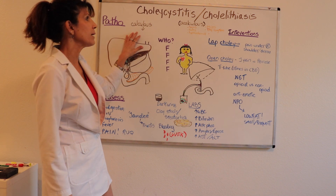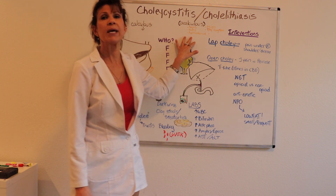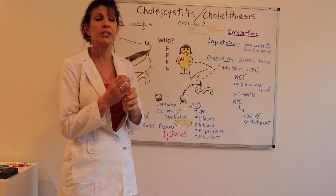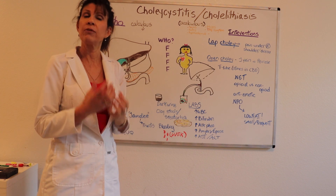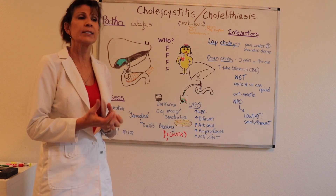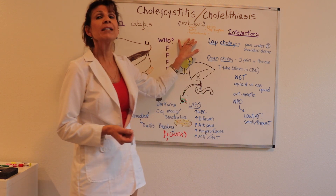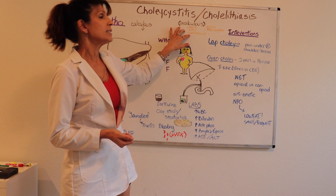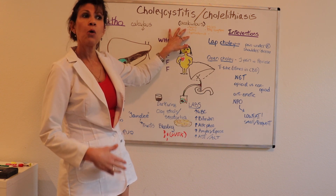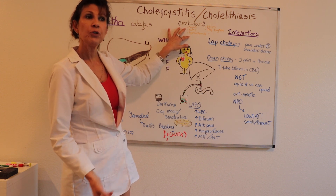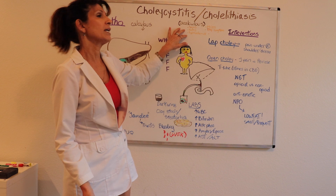There is also the type secondary to stagnancy of bile inside the gallbladder, which occurs in states of low flow and low perfusion — and that makes perfect sense.